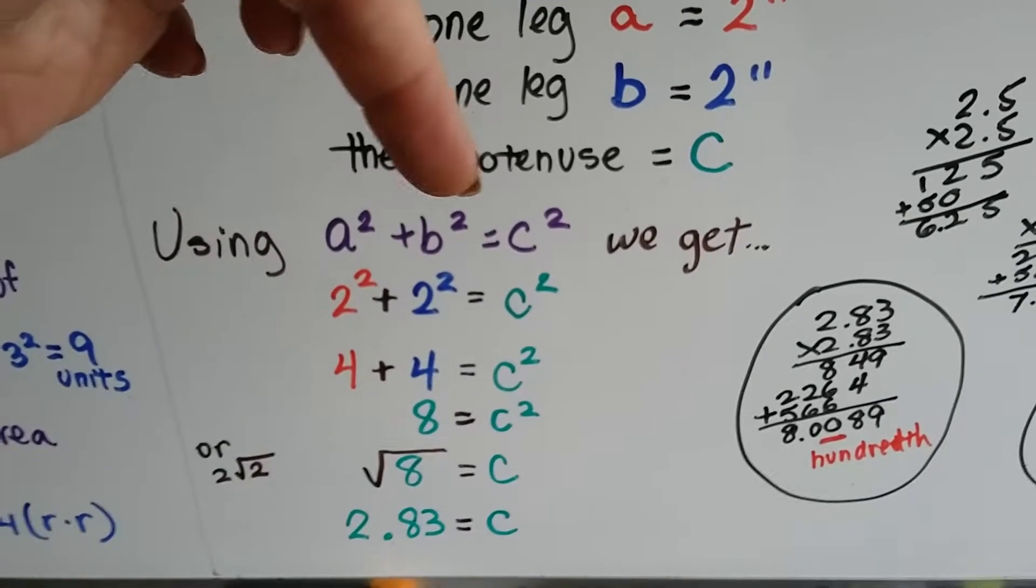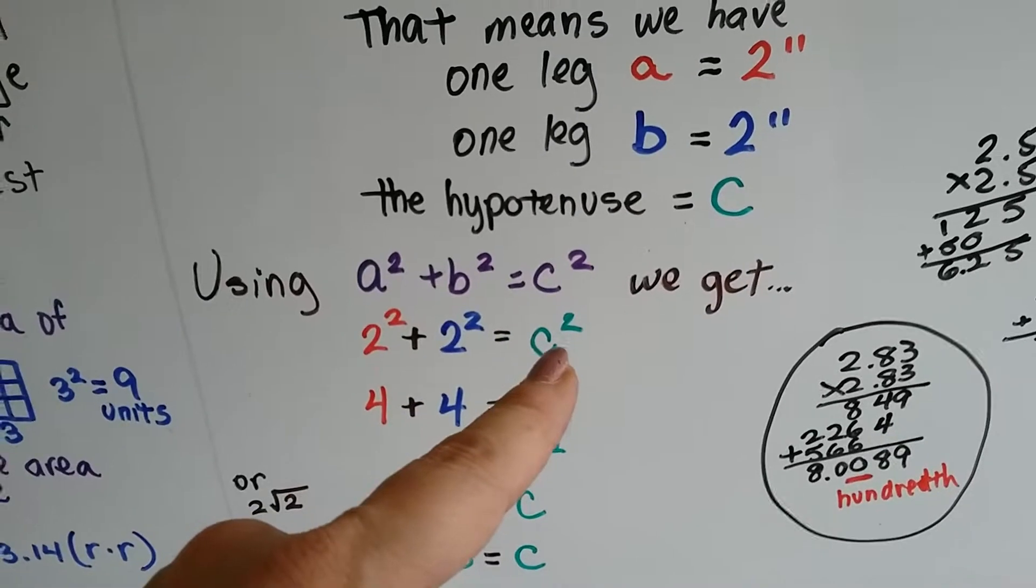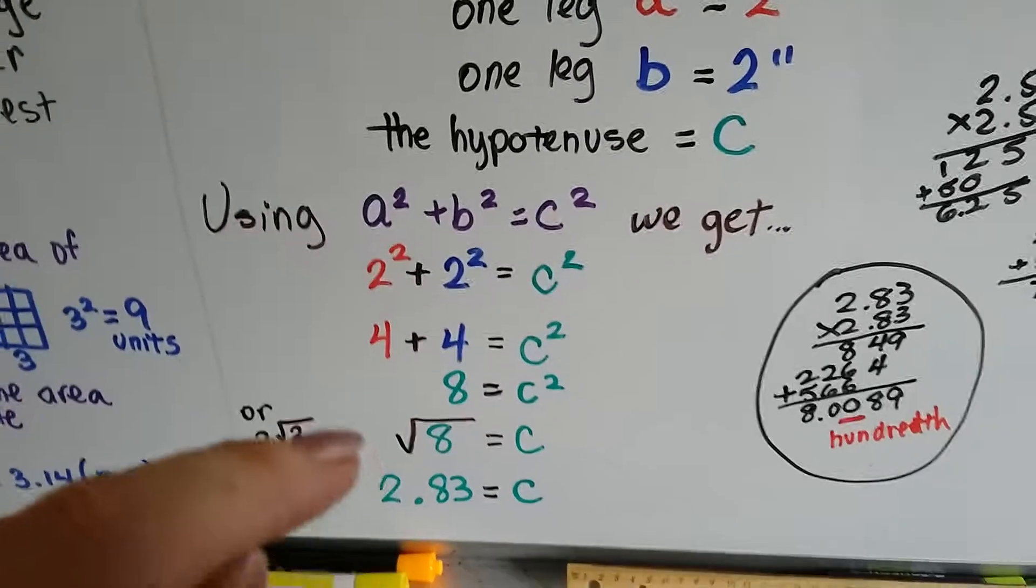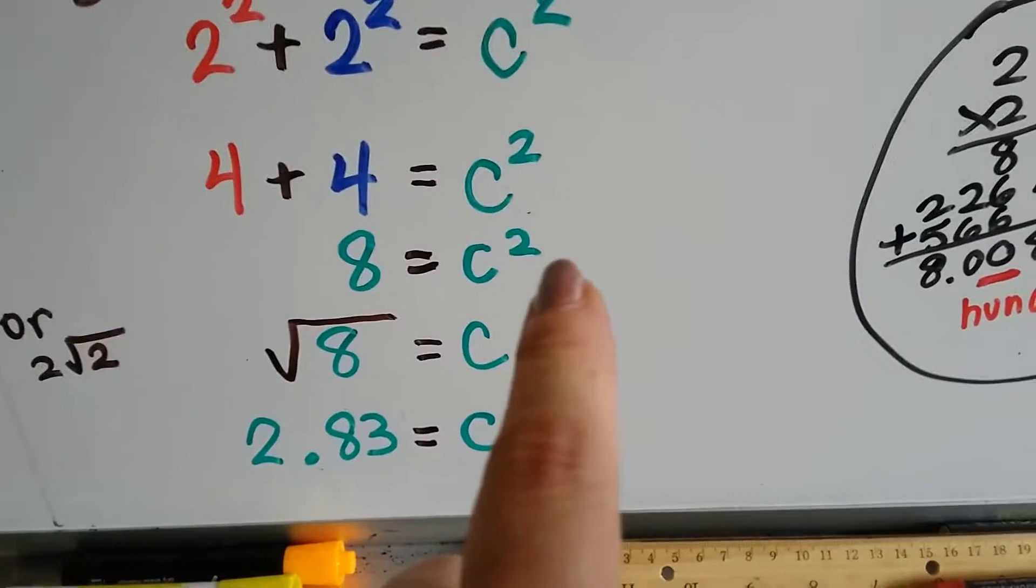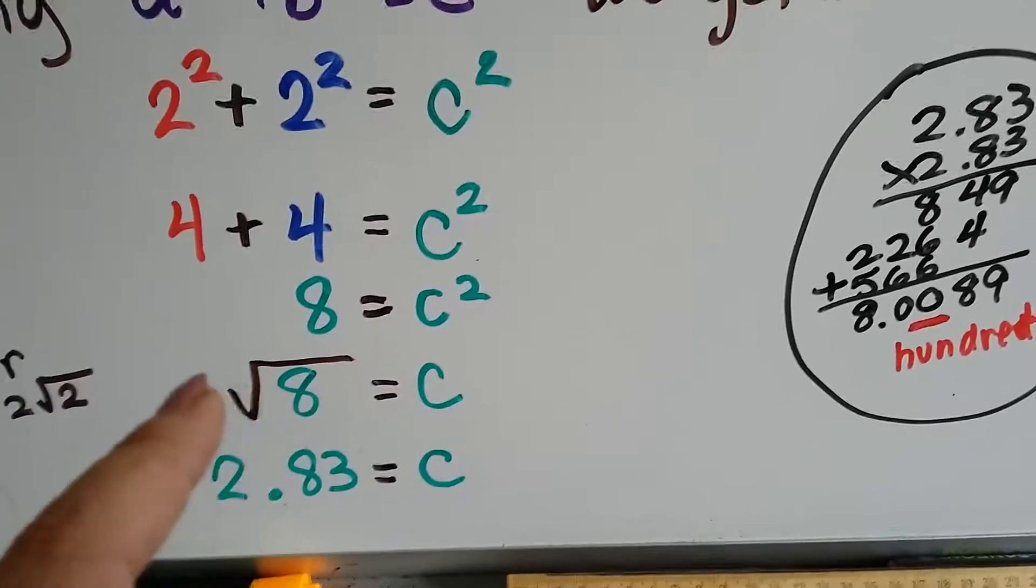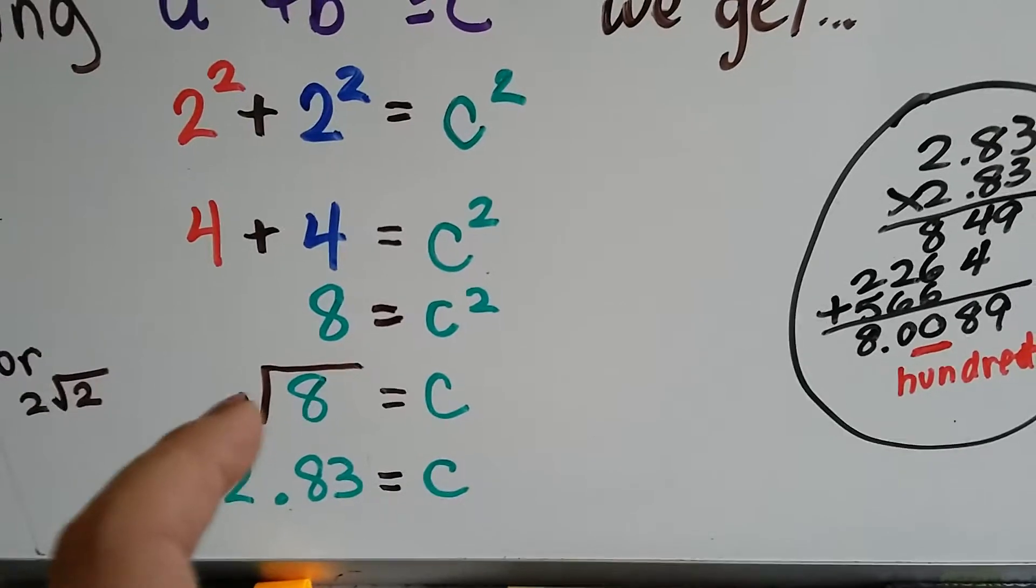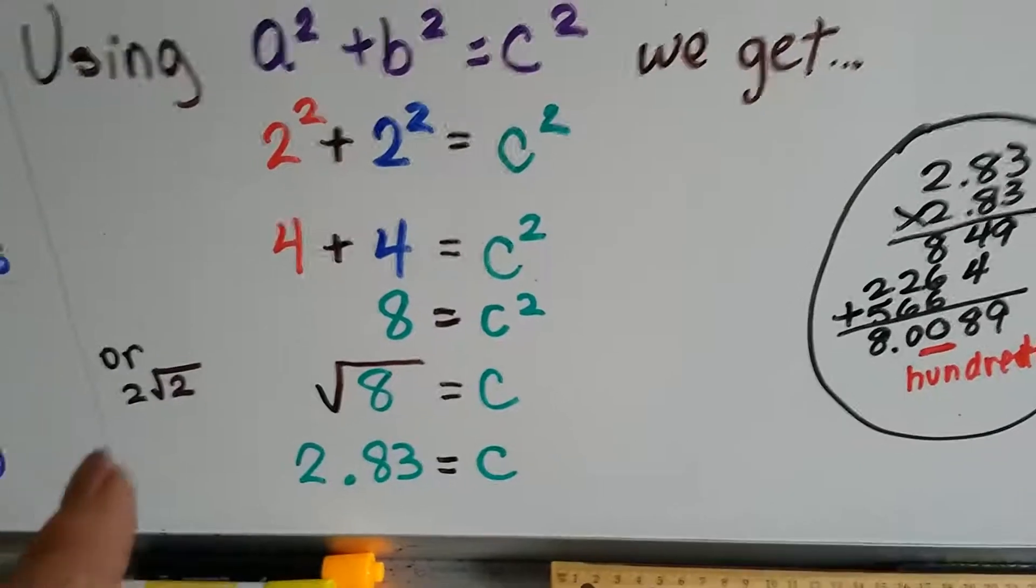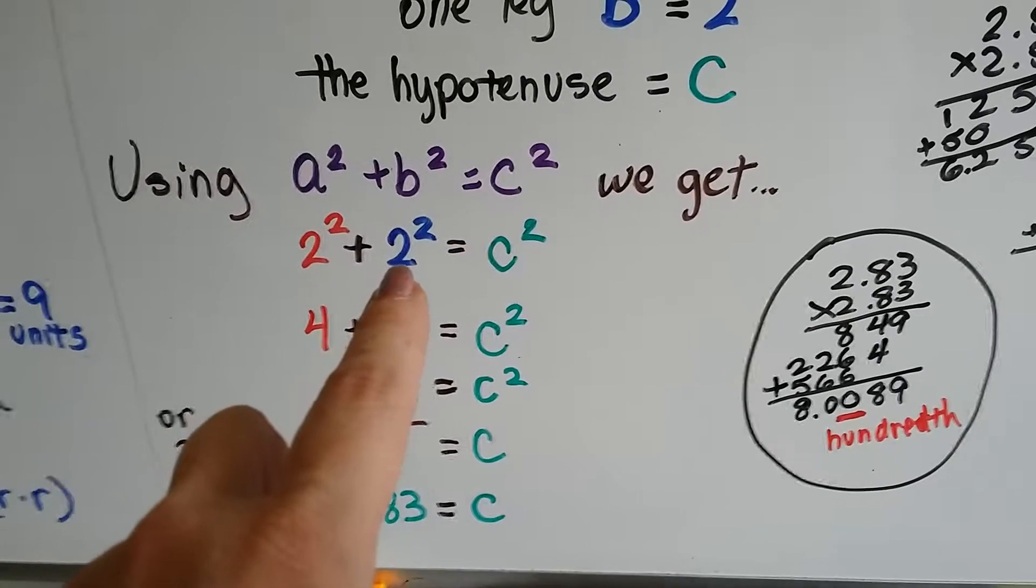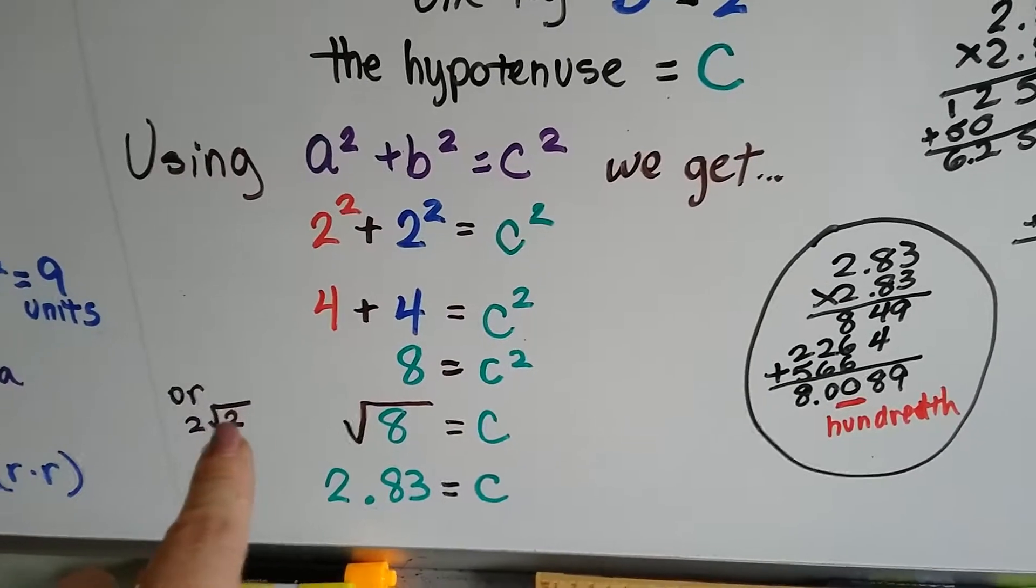And we get a squared plus b squared equals c squared, which is two squared plus two squared. Is going to equal the c squared. Well, two times two is four and two times two is four. That means eight is equal to c squared. Or what we can do is take this little squared off here, make it a regular C and put it on the other side on the eight by putting a radical symbol around the eight. That takes the little two exponent off of the C and it throws the burden of being squared onto the eight. Now we also could have said two times the square root of two. We have two to the second power and two to the second power. Square root of two and square root of two. Well, there's two of them. So it's two times two squared.